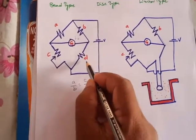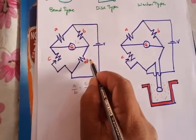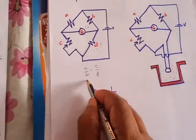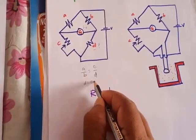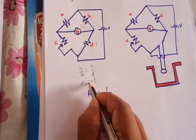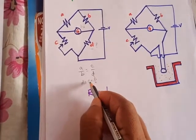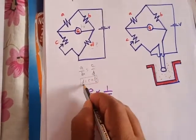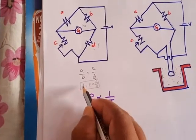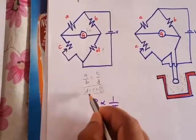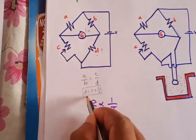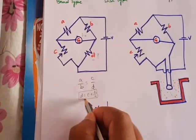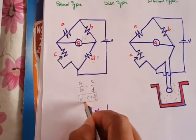Suppose we take an example where we have to find out the value of unknown resistor D. From this formula, D equals C multiplied by B divided by A. You already know the values of A, B, and C — just substitute those values and you will get the value of the resistor whose value has to be measured. That resistance is nothing but the change in resistance which is used for the measurement of temperature.